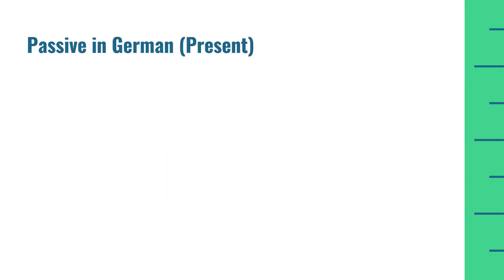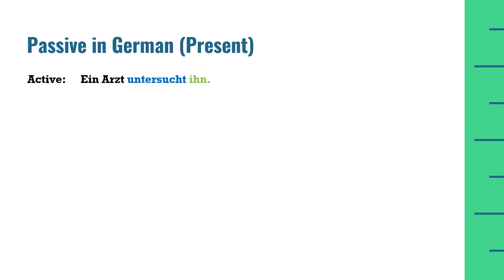Ek bahut important cheez jo passive voice ke lihaaz se zaroori hai — German language mein nominative aur accusative cases ka bahut achhi tarah se pata hona chahiye. Is ki examples dekhte hain. Maine ek sentence active mein bhi likha hai, kyunke abhi tak hum active voice mein hi saari examples karte aaye hain. Ab jab in ko passive mein convert karenge to pata hona chahiye ke kaise passive mein convert karna hota hai.